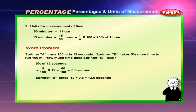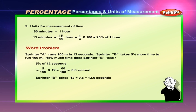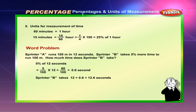Units for measurement of time: 60 minutes = 1 hour. 15 minutes = 15/60 hour = 25% of 1 hour. Word problem: Sprinter A runs 100 meters in 12 seconds. Sprinter B takes 5% more time to run 100 meters. How much time does Sprinter B take? 5% of 12 seconds = 5/100 × 12 = 0.6 seconds. Sprinter B takes 12 + 0.6 = 12.6 seconds.